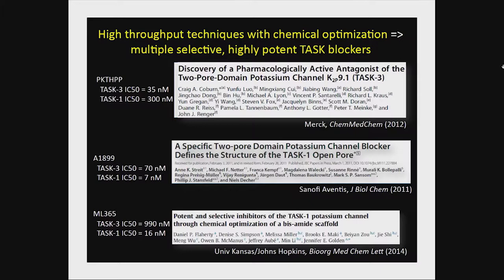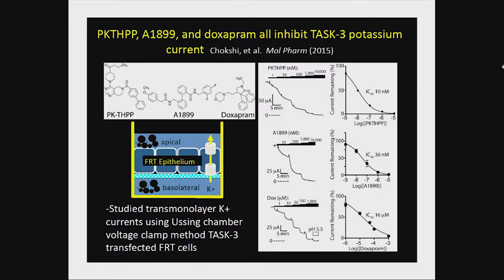In subsequent years, high-throughput techniques combined with chemical optimization identified multiple very potent TASK potassium channel antagonists. Merck published one in 2012 with IC50s of 35 and 300 nanomolar — remember, doxapram was in the micromolar range. Sanofi-Aventis has compound A1899 at 70 and 7 nanomolar. A KU/Johns Hopkins NIH-funded screen identified ML365 at 990 and 16 nanomolar. We had a chemist make the Merck compound and the Sanofi compound for us, and doxapram is still available from veterinary suppliers.